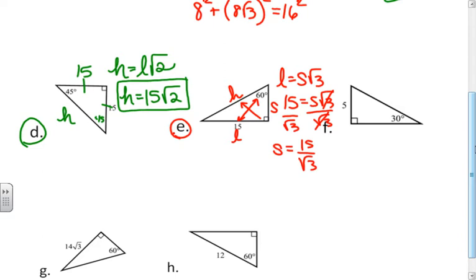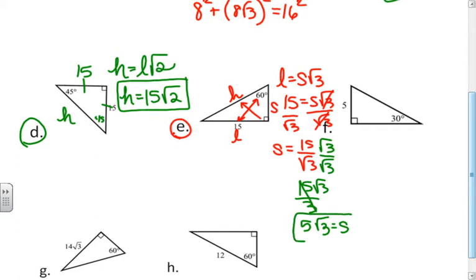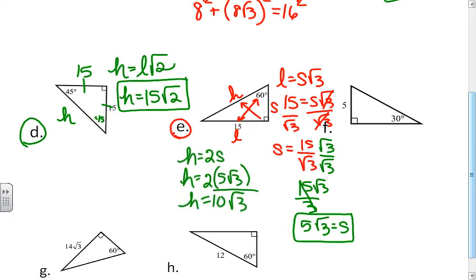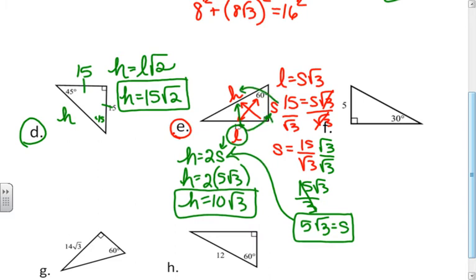I have s equals fifteen over the square root of three, but we can't leave the square root of three in the denominator, so we rationalize. That gives fifteen square roots of three over three, which simplifies to five square roots of three for the short leg. Then the hypotenuse is two times the short leg: two times five square roots of three equals ten square roots of three. Notice you can't go straight from the long leg to the hypotenuse — you must go through the short leg.